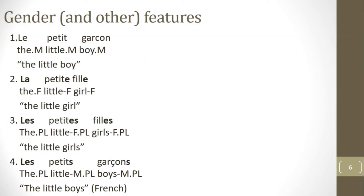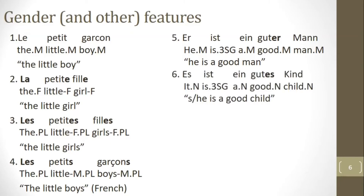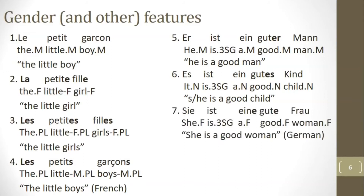French has two genders while German has three: masculine, feminine, and neuter. For example, 'er ist ein guter Mann' — Mann is masculine, reflected in a masculine adjective and determiner. In contrast, Kind, meaning child, is neuter, and we see neuter morphological marking on the adjective. Frau is feminine with feminine markings on the adjective and determiner. All nouns in German fall into a gender class, including non-social nouns: a dog is masculine, cats are feminine, and horses are neuter.